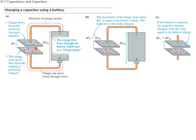There is a difference in potential between the two plates, given by the electric field times the distance between the plates. Since the field is proportional to the charge, the change in potential is also proportional to the amount of charge. So the more charge the plates have, the larger the potential difference between the two plates.